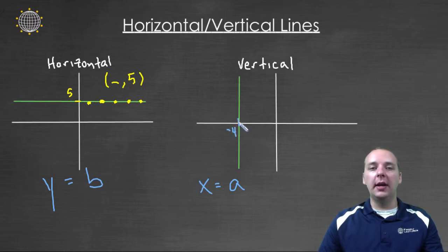then it will go through negative four zero, and negative four one, and negative four two, and negative four three, et cetera. So regardless of whatever the y coordinate is, the x coordinate will be negative four, for example.